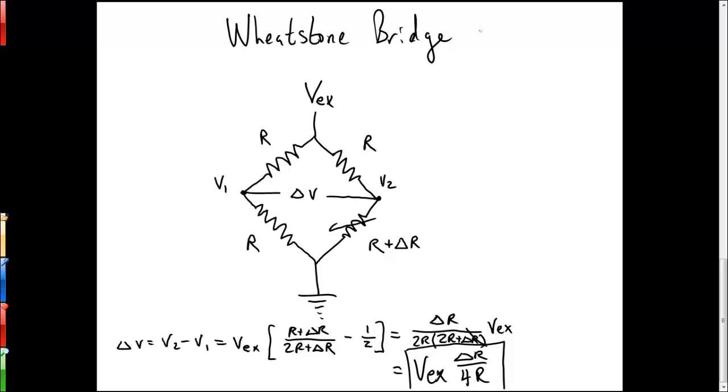For example, I'll draw up here a cantilevered beam, and we want to measure the strain in this beam as we apply a force down on the end. Let's say we put a strain gauge on the top, which will elongate as we push down with the force, and a strain gauge on the bottom that will get shorter as we push down on the end. And as you know, if this beam is symmetric, the strain on the top will be exactly opposite the strain on the bottom.